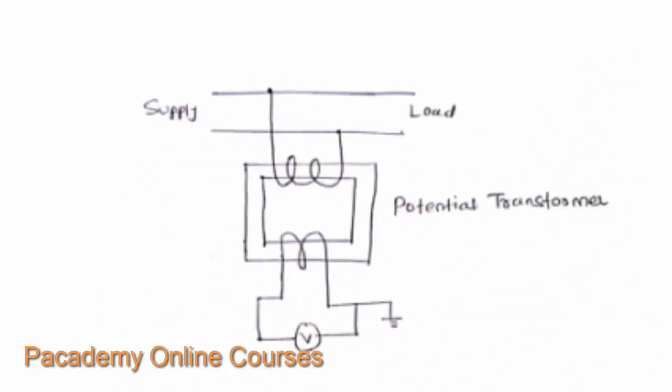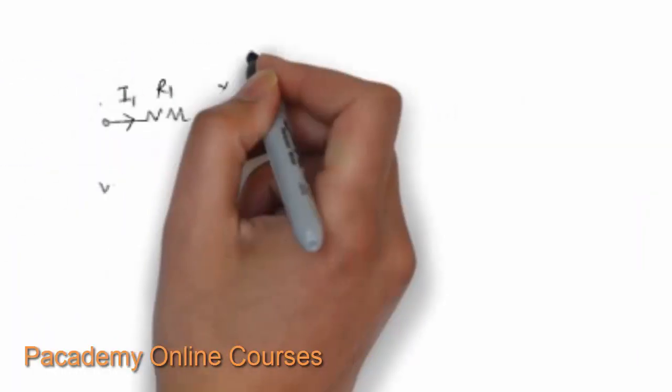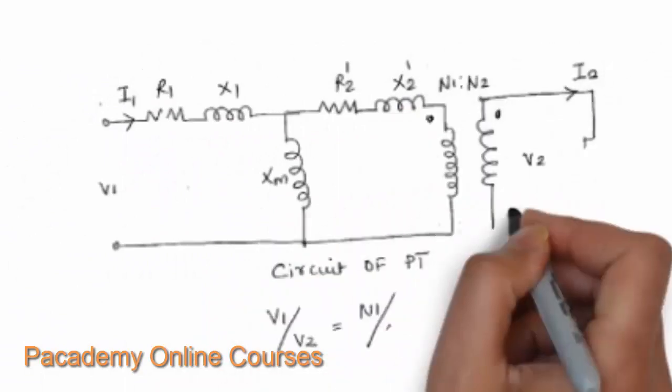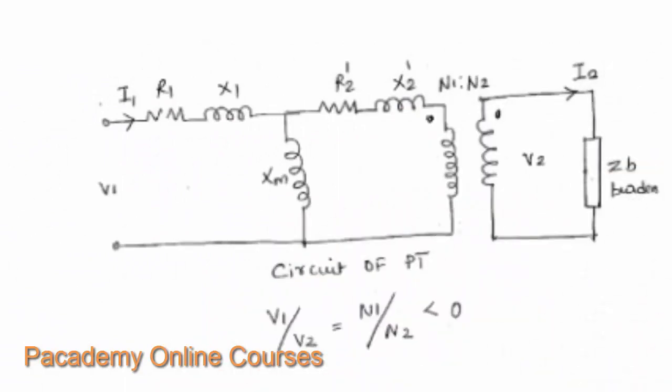Looking at the diagram of a typical potential transformer, there is a transformer core and the primary is connected directly across the supply lines, so it measures the line-to-line voltage. The voltage is stepped down — the primary has a large number of turns and the secondary has fewer turns. The voltage is measured by the voltmeter. In the equivalent circuit diagram of a potential transformer, the values of the secondary side have been transferred to the primary side.